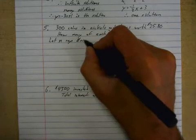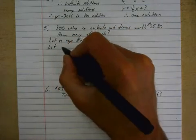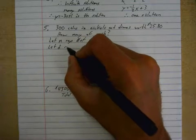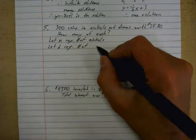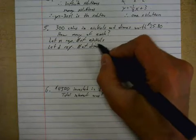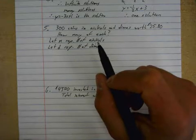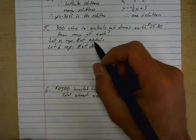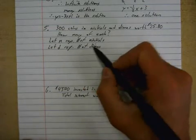Now I will take a half mark off if you just say let n represent nickels. You have to tell me what it's representing - it's representing the number of them. So d is representing the number of dimes, not just d represents dimes. It's the number you're dealing with. It's kilograms of cashews, not just cashews. So here it's the number of nickels and the number of dimes.